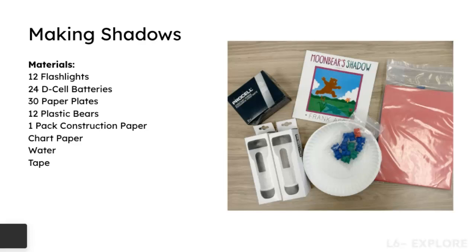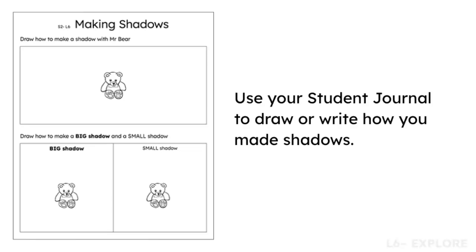For the explore portion, you will set up the Making Shadows investigation. The detailed procedure for this activity can be found in the teacher guide and the curriculum slides. You will set up all of the shadow maker materials in a bin for student pairs. Be sure to take care of these materials as you will reuse them in the next lesson. You will have students use their Making Shadows journal page to record their observations as they figure out how to make shadows.